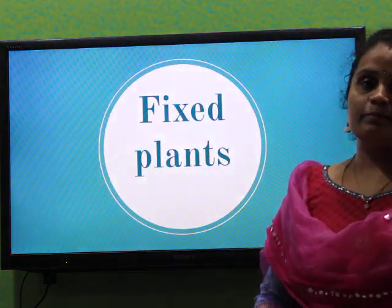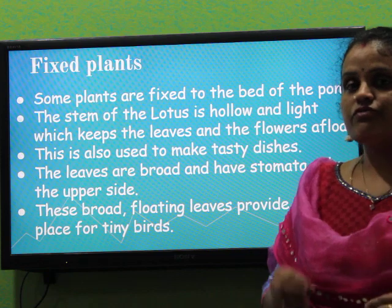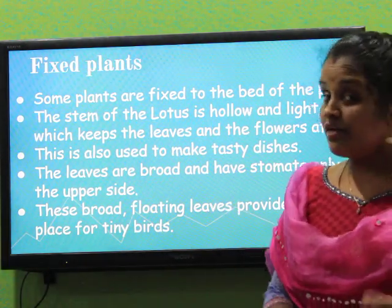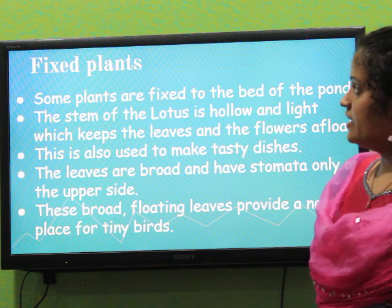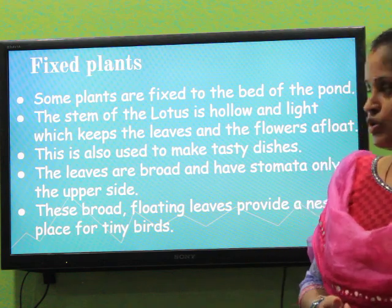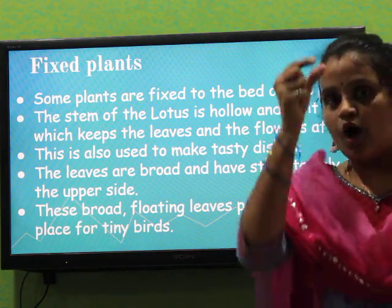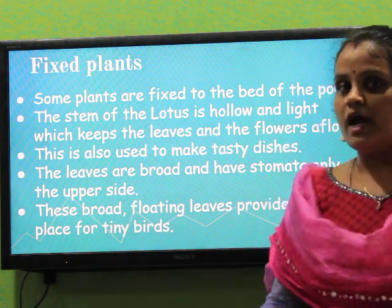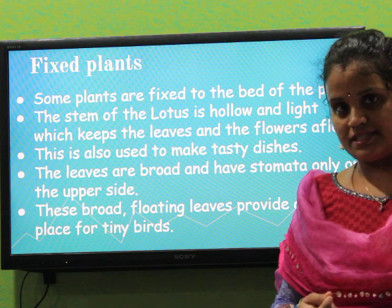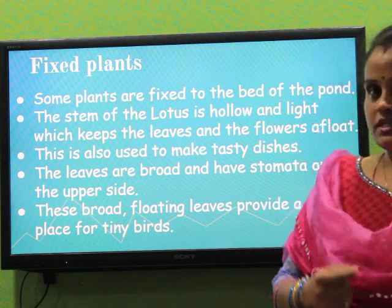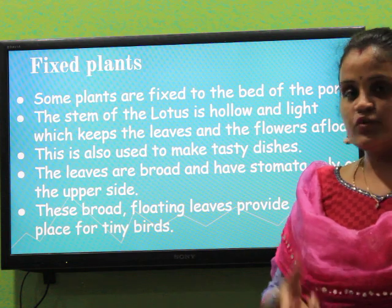Next topic is fixed plants. Fixed — it is fixed to the bed of the pond. The plants which are fixed to the bed of the pond are called fixed plants. Have you seen lotus, children? Yes. Lotus is a national flower. Here for lotus, we have broad leaves and the stem is hollow and lightweight. The stem is fixed to the bed of the pond and the leaves are very broad in nature. Those leaves provide nesting to tiny birds. And we get lotus seeds, from which we can prepare yummy gravies, curries and even sweet dishes.